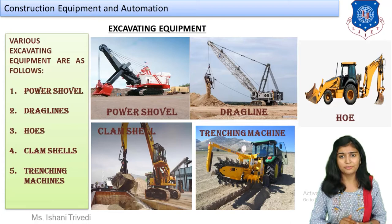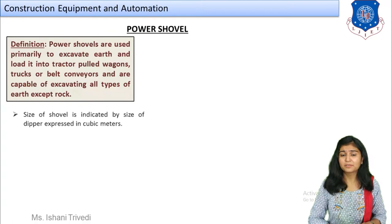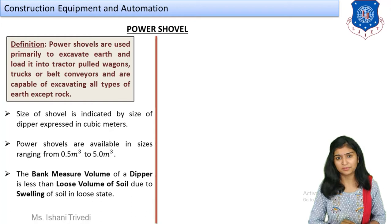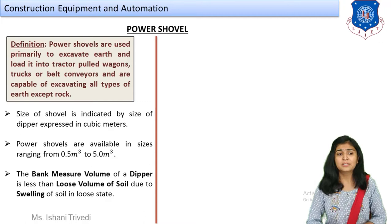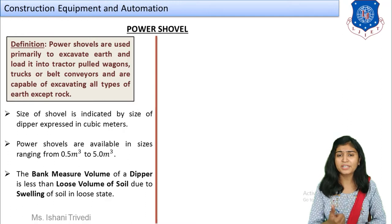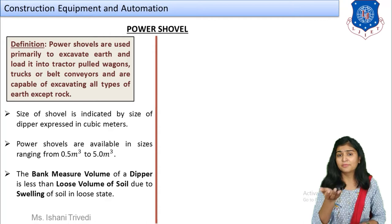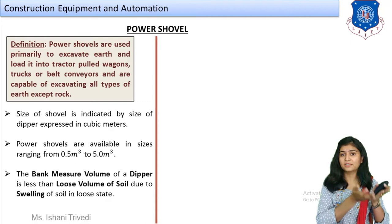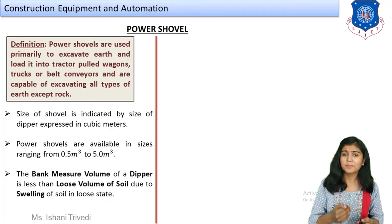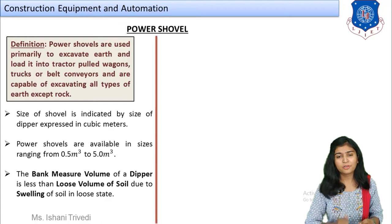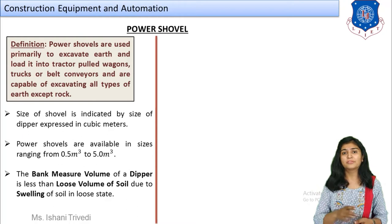Now we start with the first and most basic equipment: the power shovel. By definition, power shovels are used primarily to excavate earth and load it into tractors, trucks, wagons, or belt conveyors. They are capable of excavating all types of earth except rock — you cannot use it where rocks are present, otherwise it is a universal equipment for all types of soil.